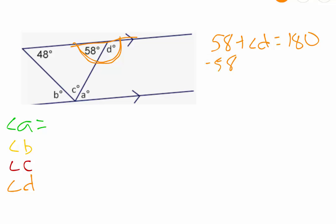So we can find angle D if we just take 180 and we subtract 58 from it, and if we do that, we get 122. So that means that angle D must be 122 degrees.